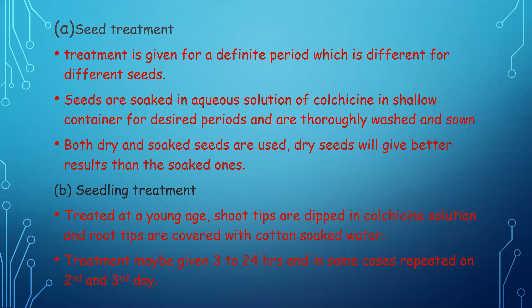The next method is seedling treatment, where seedlings are treated with colchicine at a very early stage. Shoot tips are dipped in colchicine solution. The treatment may be given for 3 to 24 hours and in some cases repeated for 2 to 3 days.